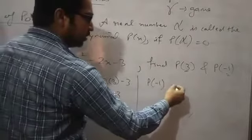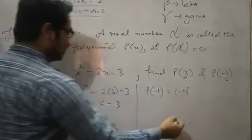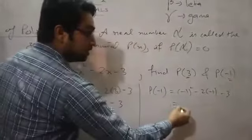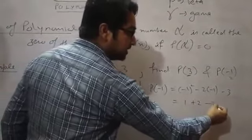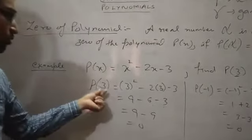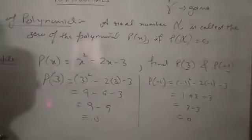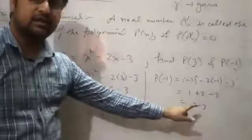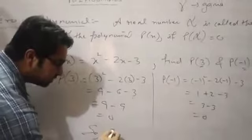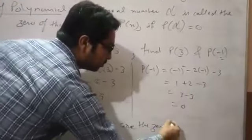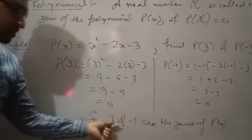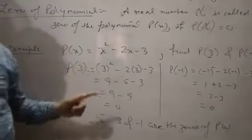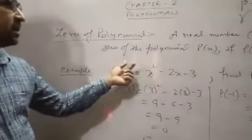Now put P(-1): (-1)² - 2×(-1) - 3 = 1 + 2 - 3 = 0. So the value of P(3) is 0 and the value of P(-1) is 0. When we put x = 3 we get 0, and when we put x = -1 we get 0. Therefore, 3 and -1 are the zeros of P(x), because substituting them gives a result of zero.